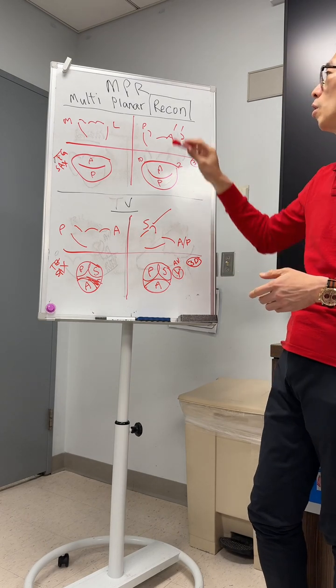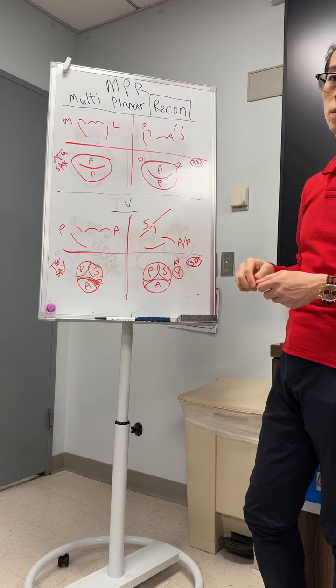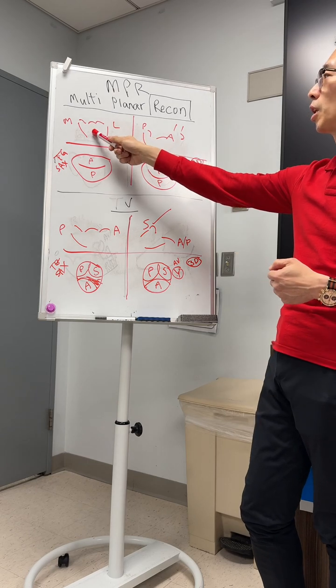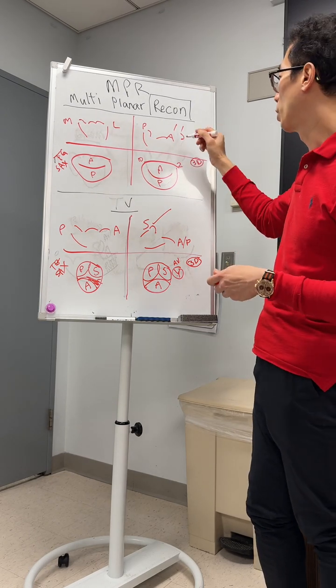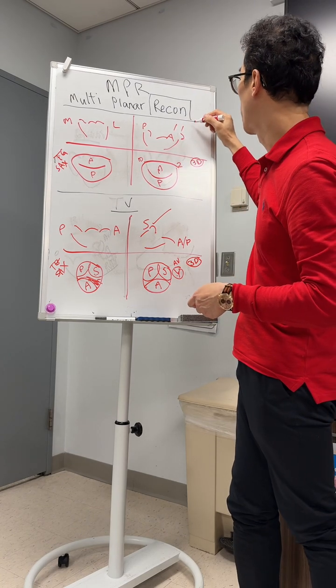So for MPR for mitral, this is the working view. This is basically the bicommissural view. This is the either the grasping or perpendicular view.